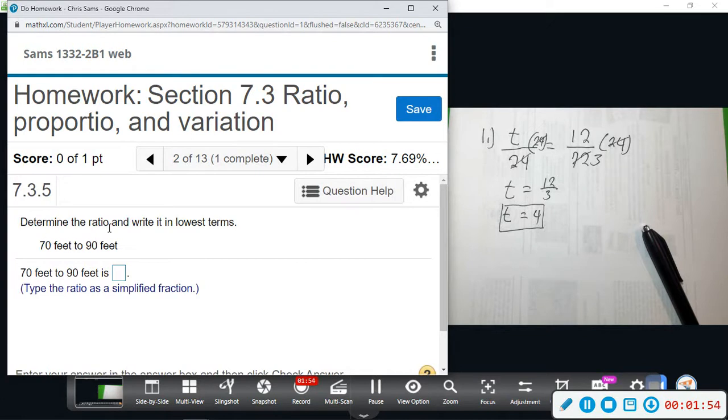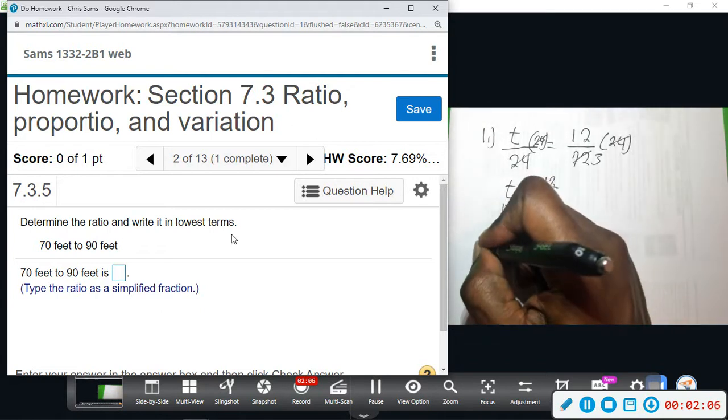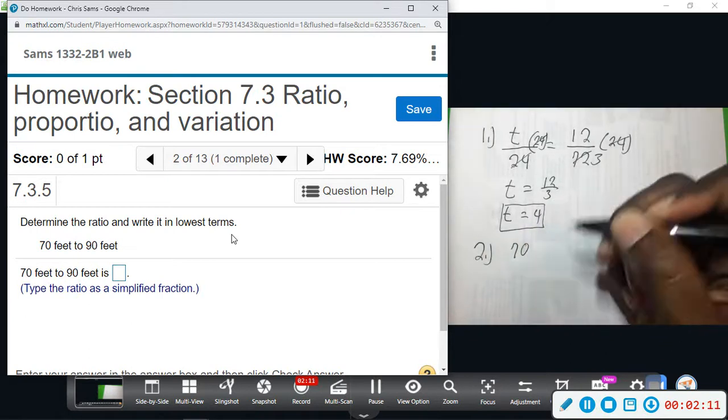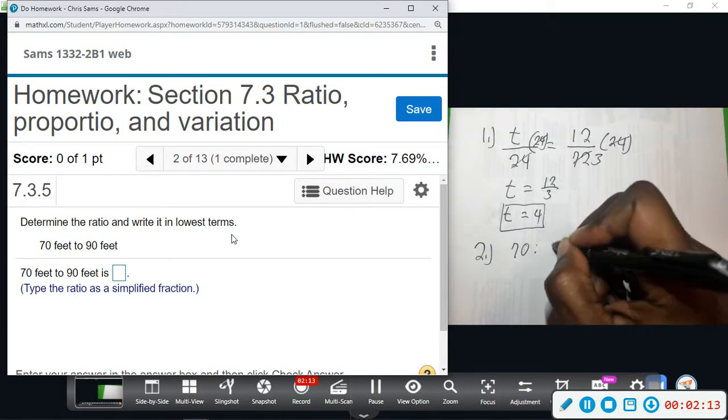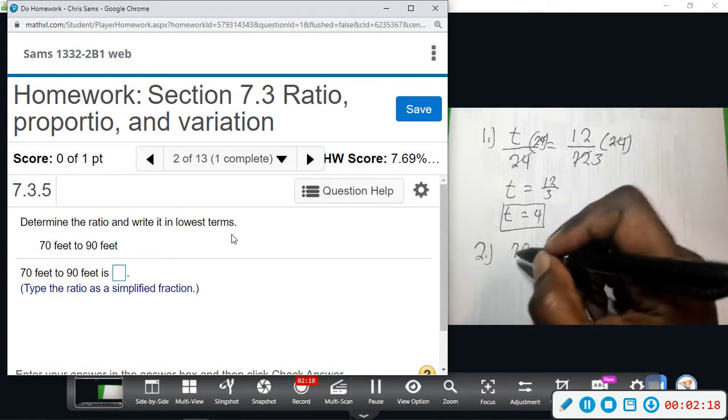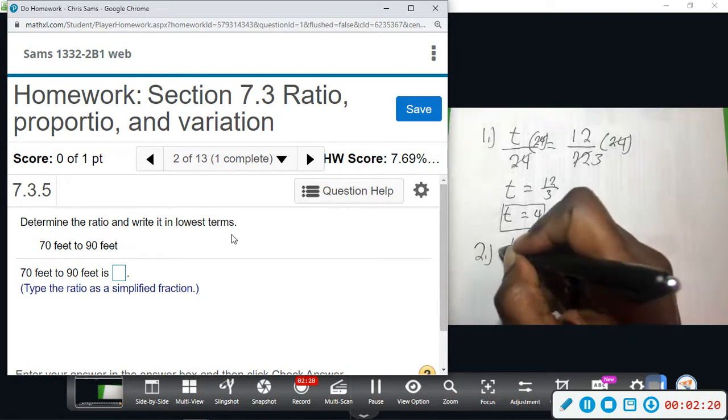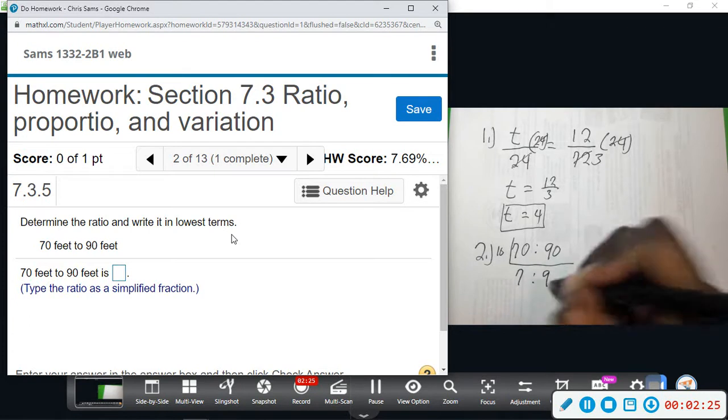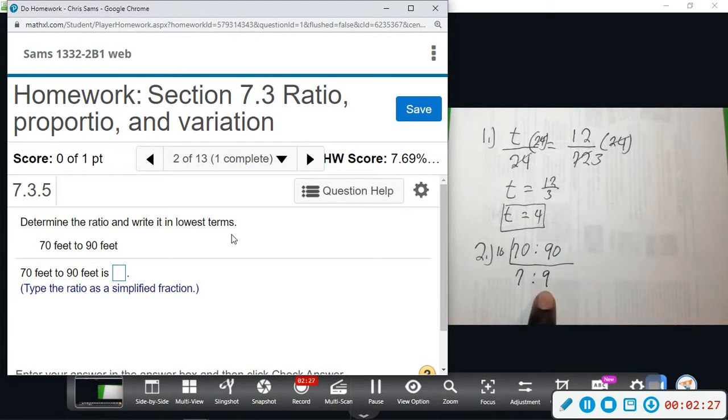All right, so this one wants us to determine the ratio and write it in lowest terms: 70 feet to 90 feet. So when we do ratio, we just kind of separate it with comma—70 to 90 like this. And then both these guys are divisible by 10, so divide them by 10 and we get 7 to 9.